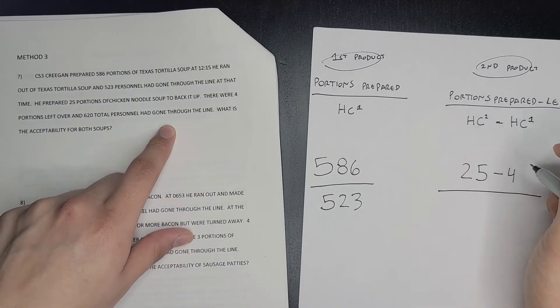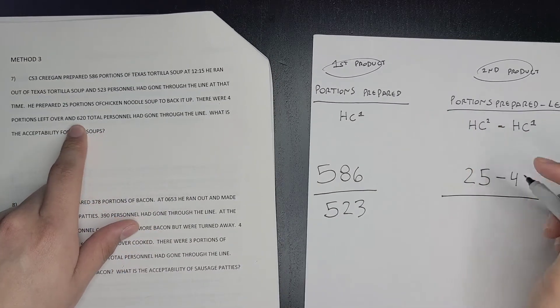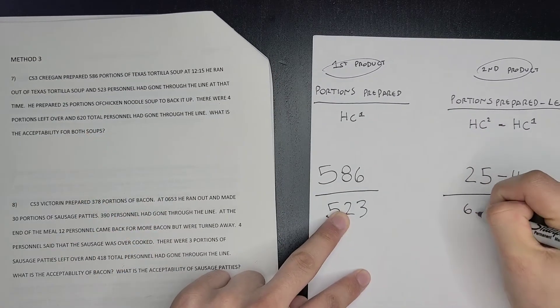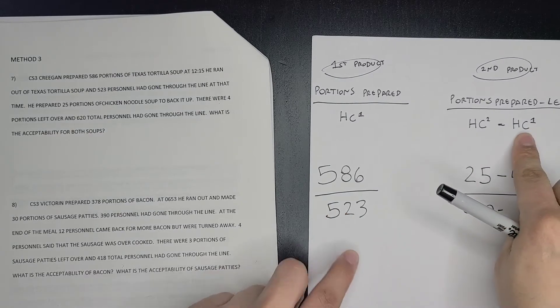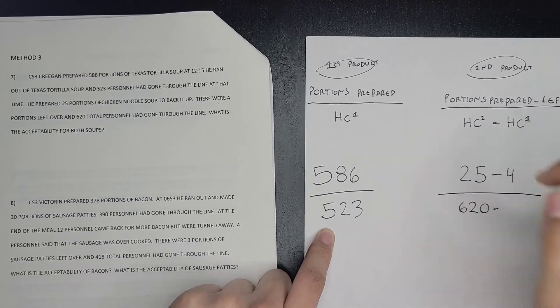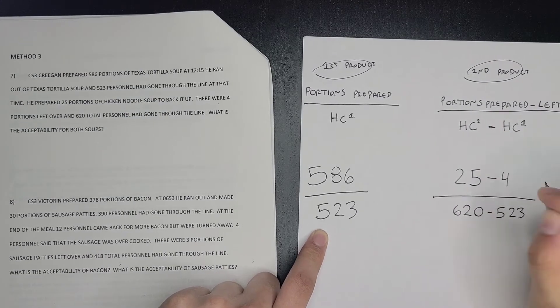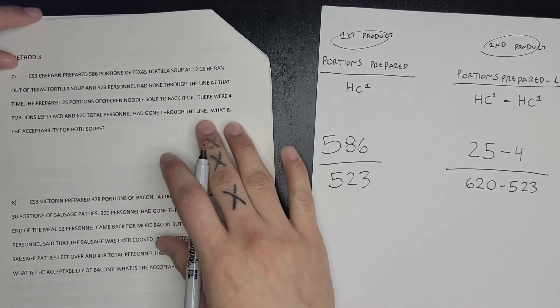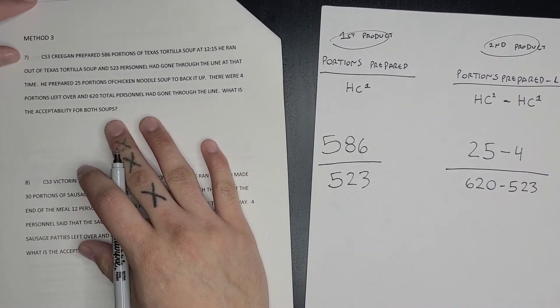So minus 4 divided by your... It says portions left over and 620 personnel had gone through the line. That would be your second head count, so it'd be 620 minus your first head count which is 523. What is acceptability for both soups? I have to do both acceptabilities for both products.